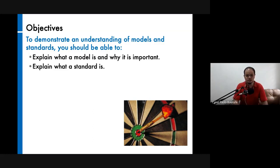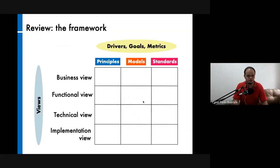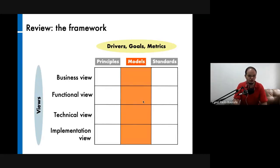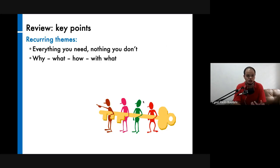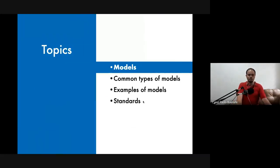Just a review: models and standards are two of the six architectural elements. At this point, you have to realize that it's all about everything you need and nothing you don't — there's nothing superfluous in architecture. If you recall these four key phrases — why, what, how, with what — these refer to the four views of architecture. So now we go with models.